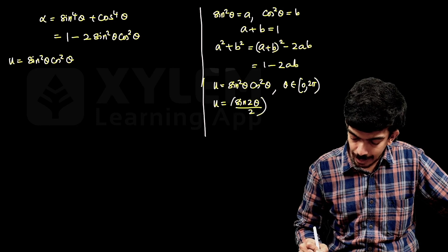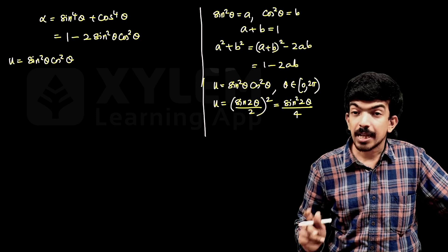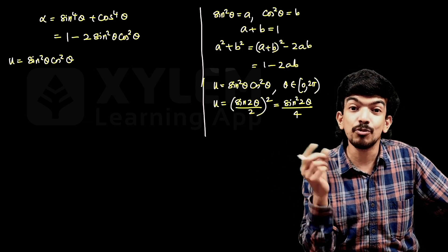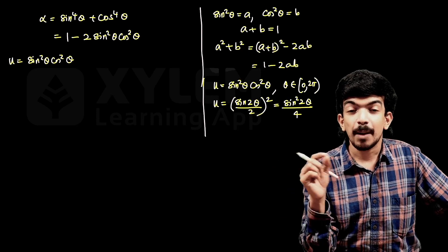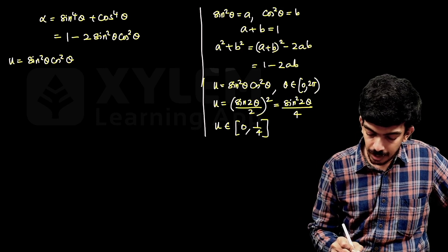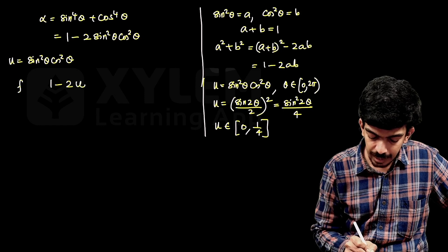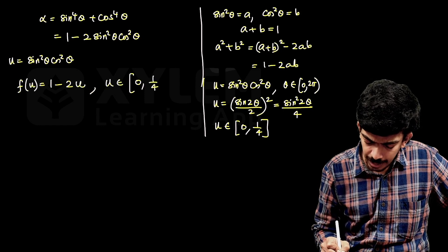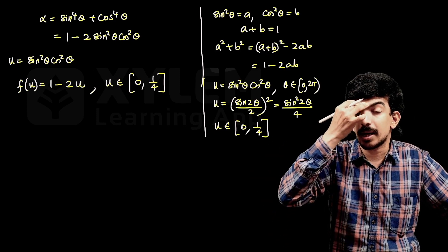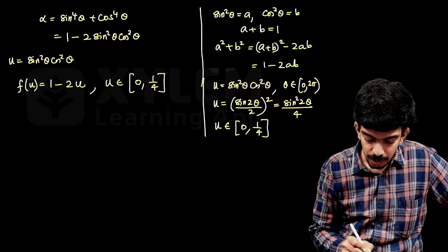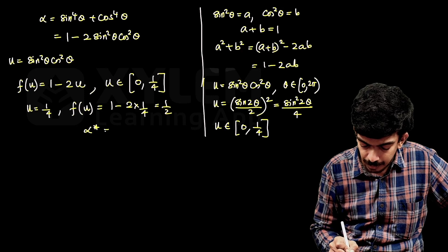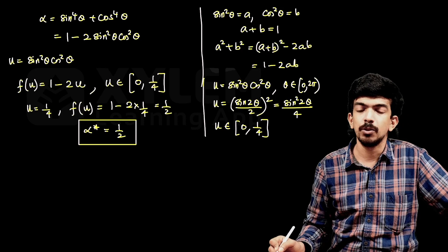Now sin²θcos²θ = (sin2θ/2)² = sin²2θ/4. Since θ ∈ [0, 2π], 2θ ∈ [0, 4π], so sin²2θ ∈ [0, 1], meaning u = sin²θcos²θ ∈ [0, 1/4]. Our function is f(u) = 1 − 2u for u ∈ [0, 1/4]. This is minimized when u = 1/4, giving f(1/4) = 1 − 1/2 = 1/2. So α* = 1/2.